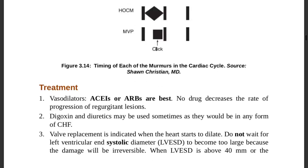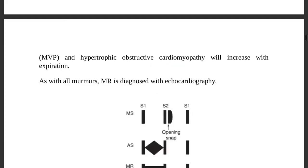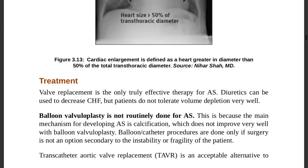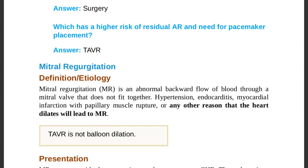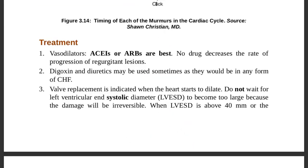Treatment of mitral regurgitation: use vasodilators — ACE inhibitors (ACEi) or ARBs are best. No single drug decreases the rate of progression of regurgitation. Digoxin and diuretics may also be used as in congestive heart failure. Valve replacement is indicated when the heart starts to dilate — monitor end-systolic diameter regularly, and proceed to valve replacement once dilatation becomes significant.